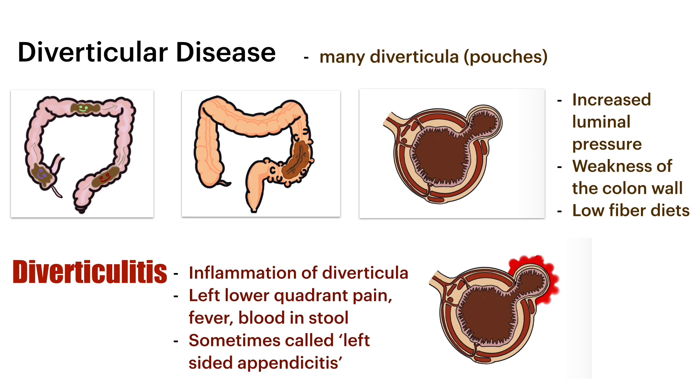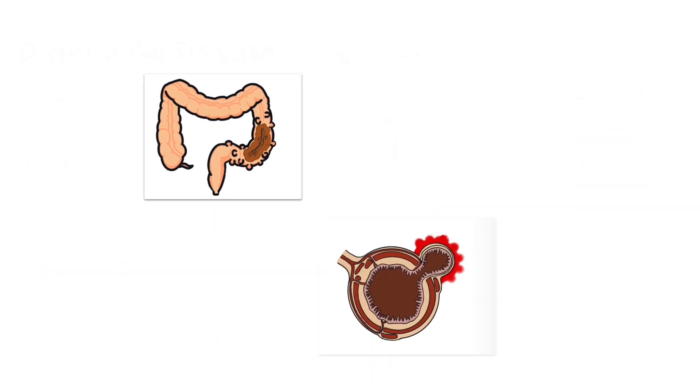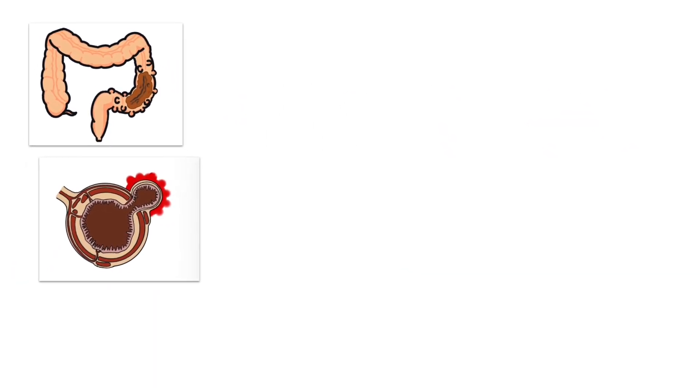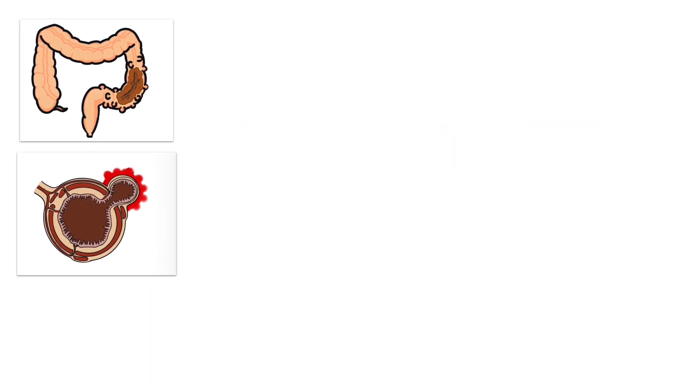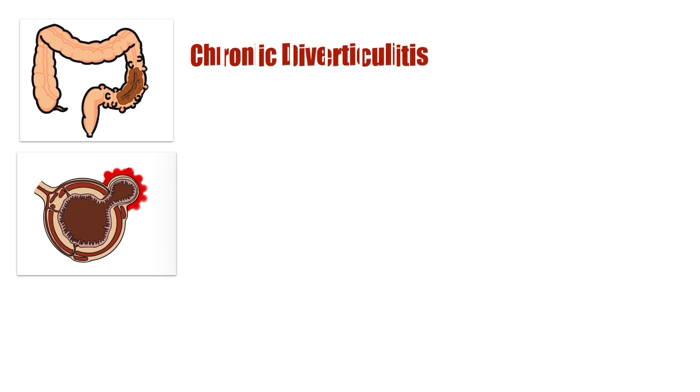Diverticulitis is sometimes referred to as left-sided appendicitis because of the presentation it makes. The appendix is on the right, but because of the area of the colon affected, diverticulitis happens on the left. That is the first complication of diverticular disease.